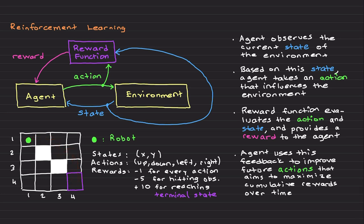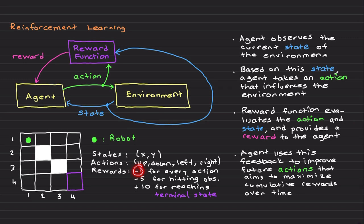Reaching the terminal state earns 10 points. Hitting an obstacle gives a minus five penalty, and minus one is applied for every action taken. The robot will learn to find the shortest path, since every unnecessary action is penalized with minus one. Over time, the robot learns not to take inefficient routes. This is the basic framework: the environment has states, the agent applies actions, and the reward mechanism provides feedback to improve behavior.